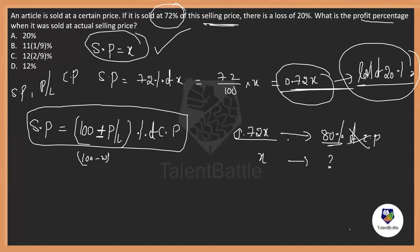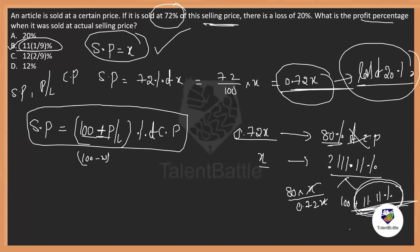Let's just do cross multiplication. 0.72 is 80%. So, X will be how much percent? 80 into X divided by 0.72X. X and X will get cancelled. 80 divided by 0.72 means it will be 111.11%. You will have on-screen calculator, so you can easily do it. It's going to be 111.11%. That means, it's nothing but 100 plus 11.11%. What is the profit percentage? 100 plus profit.